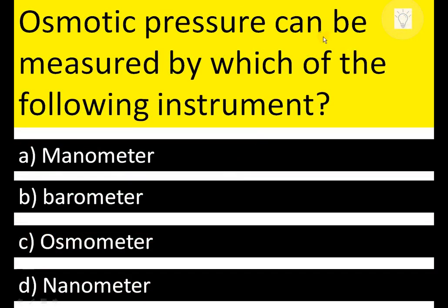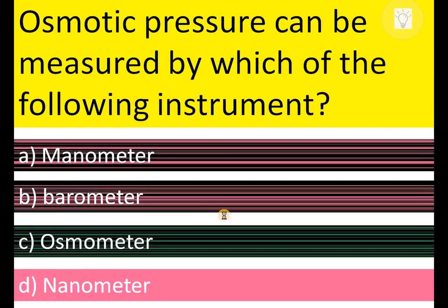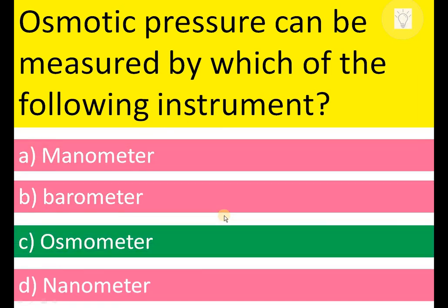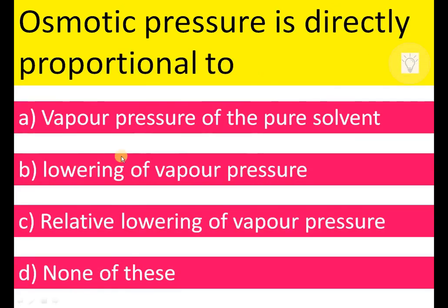Osmotic pressure can be measured by which instrument? Manometer, barometer, osmometer, or nanometer. Nanometer is eliminated as incorrect. The correct answer is osmometer. Osmotic pressure is directly proportional to vapor pressure of pure solvent, lowering of vapor pressure, or relative lowering of vapor pressure — relative lowering of vapor pressure is the correct answer.